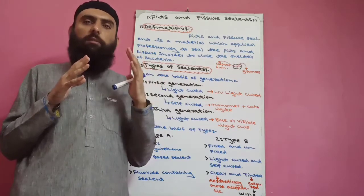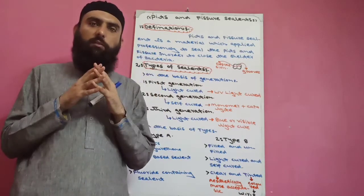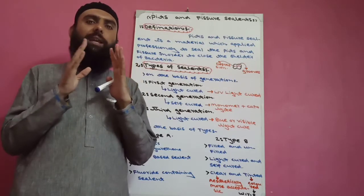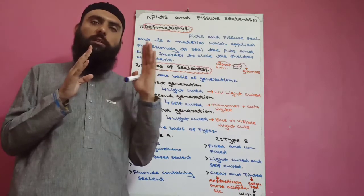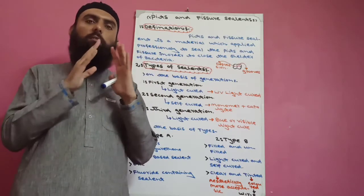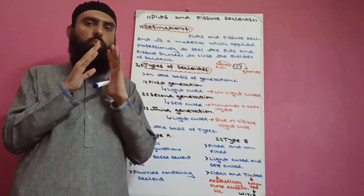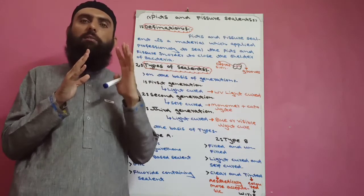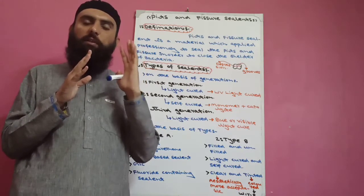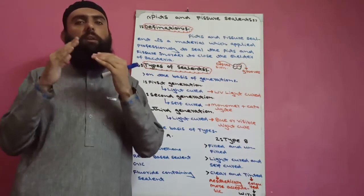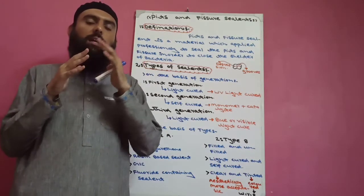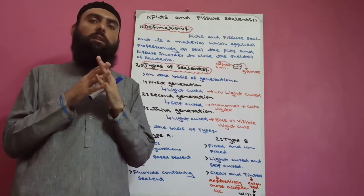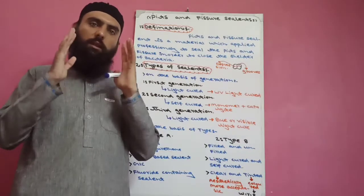The pits and fissure surface is only 12 percent of the total tooth surface, but 50 percent of caries occurs in pits and fissures. If we compare with the other surfaces of the tooth, there are eight times more caries occurrences in pits and fissures compared with smooth surfaces.